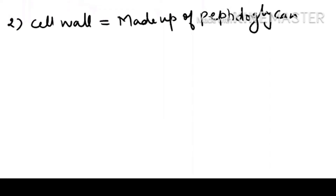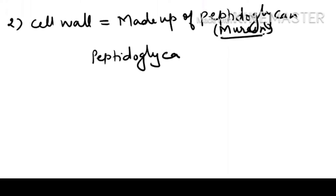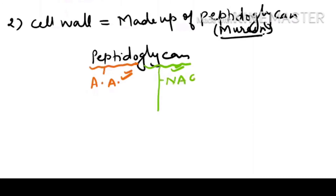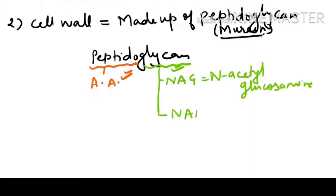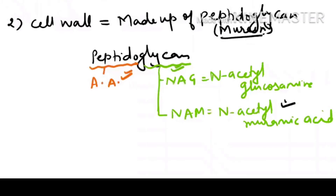The next component is the cell wall, which is made up of peptidoglycan, also known as murein. The name itself tells you it has peptide bonds, meaning amino acids are present, and 'glycan' means it is a modified sugar — so it contains carbohydrate. The glycan consists of NAG (N-Acetyl Glucosamine) and NAM (N-Acetyl Muramic Acid). Because of muramic acid, we call the bacterial cell wall murein.